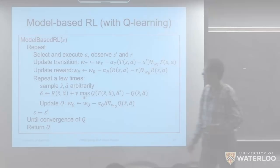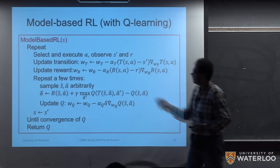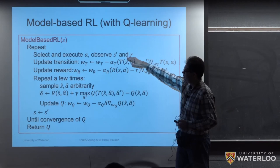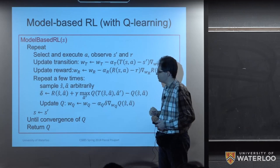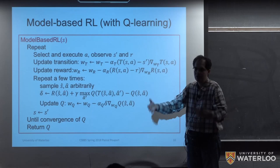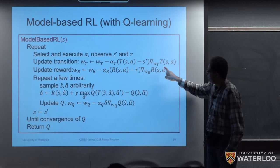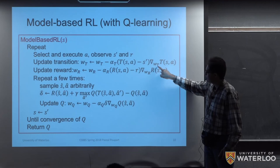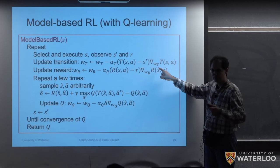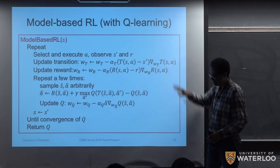If we replace value iteration with Q-learning, we get the following algorithm. As before, we select and execute an action and observe the next state and reward. But now since we can't enumerate states, we update our model using a function approximator with weights W_T for the transition model. T(S,A) can be a neural network, Gaussian process, sum-product network, or linear function approximator.